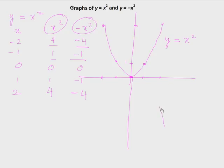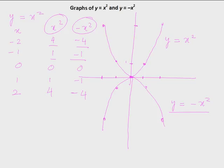The graph of y = -x² would look like the reflection of the original graph in the x-axis. The quickest way to obtain it is to reflect y = x² in the x-axis. So these are the graphs of the two simplest parabolas: y = x² and y = -x².